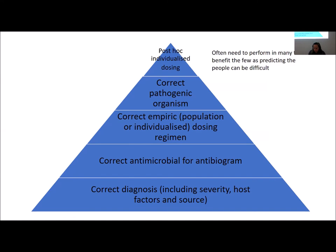If I had to message this to a clinician or executive about optimising PKPD for bacteria in clinical care, this is the hierarchy of how a clinician thinks. They care about diagnosis first — if you have the wrong diagnosis, individualised dosing doesn't matter. We need the correct antimicrobial for the antibiogram, a correct empiric dosing regimen on admission, appropriate sampling to get to the bug, and then resources in place to enable post-admission individualised dosing. It's a lot to be done.